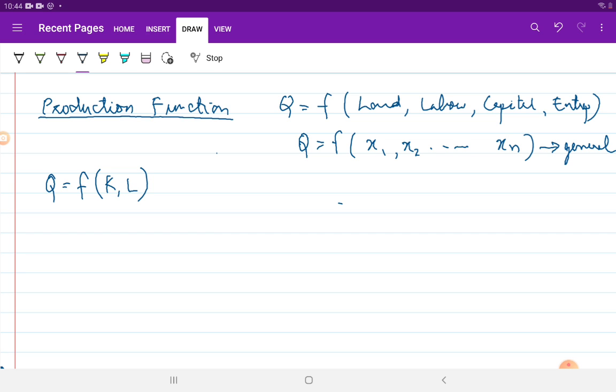X1 represents the number of units of factor input 1, X2 represents number of units of factor input 2 and so on. Xn will represent number of units of factor input n.